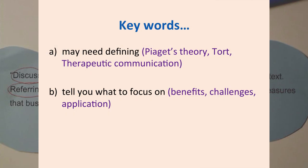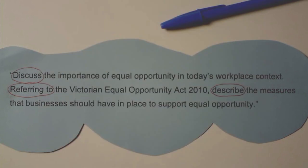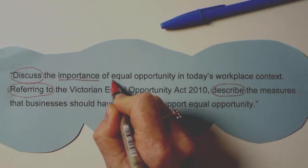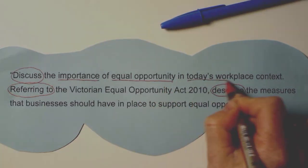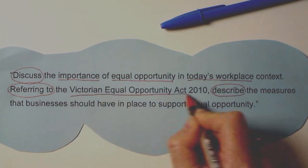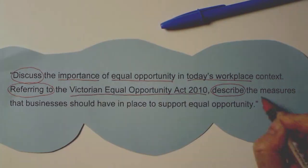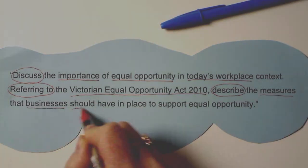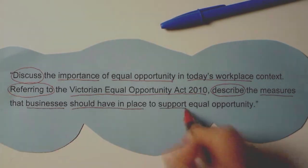Next, we need to underline the key words. These words tell you what you need to focus on in your assignment and can also provide a starting point for you when you start researching. The key words in this topic would be: importance, equal opportunity, today's workplace, the Victorian Equal Opportunity Act 2010, measures, businesses, businesses should have in place, support, and equal opportunity.